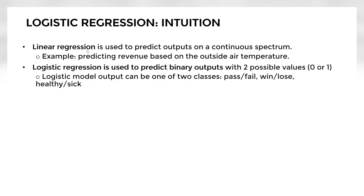Let's start with the logistic regression intuition. First, linear regression is used to predict outputs that are continuous — for example, predicting the salary of an employee or the stock price for tomorrow. These are continuous outputs and we can use simple linear regression for that. However, logistic regression is used to predict binary outputs that have two possible values, either zero or one — outputs like win or lose, healthy or sick.